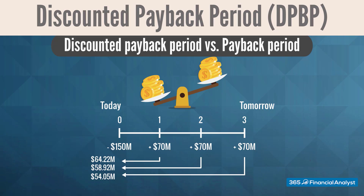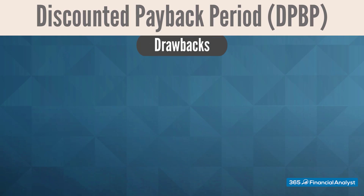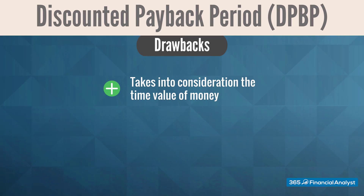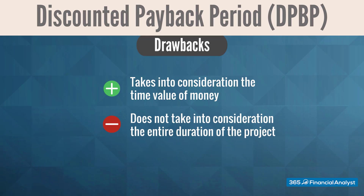What about the drawbacks of this measure? You can see that the discounted payback period looks a lot like NPV — it uses the time value of money to discount cash flows. Still, it doesn't consider what happens beyond the break-even point. Let's elaborate a little bit more here.